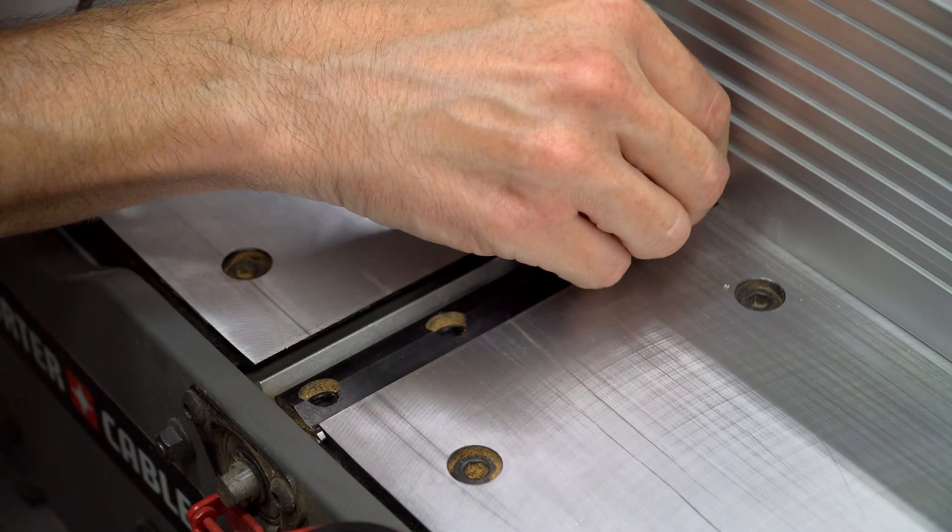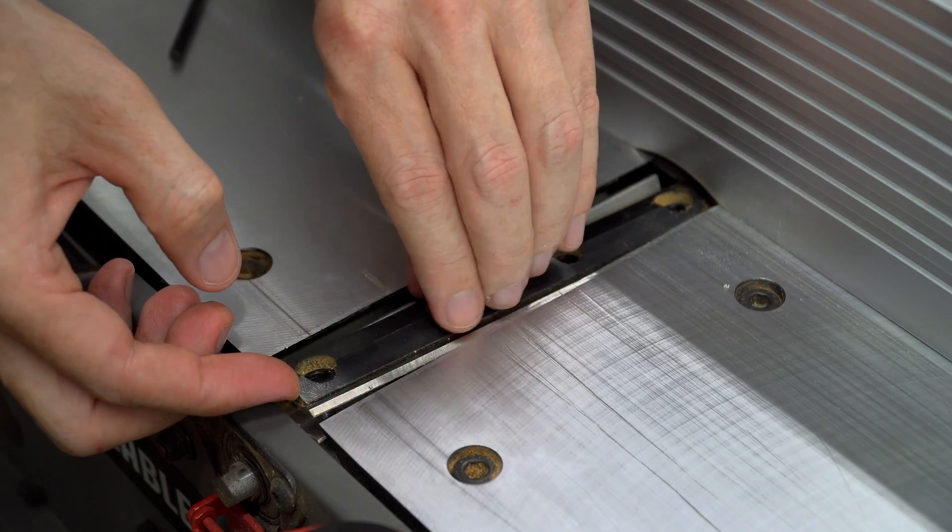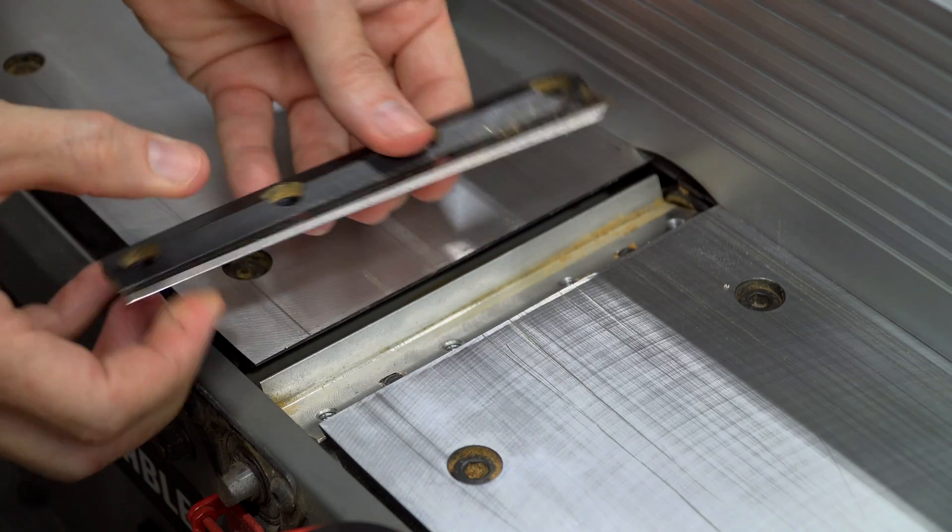You can then lift the blade and clamping plate out of the assembly. Remember to be careful, because these knives can be razor sharp.